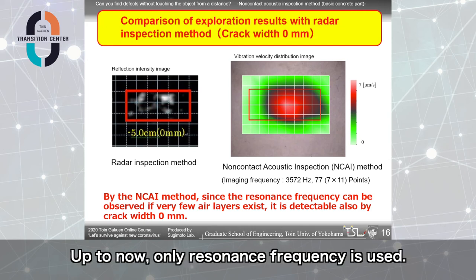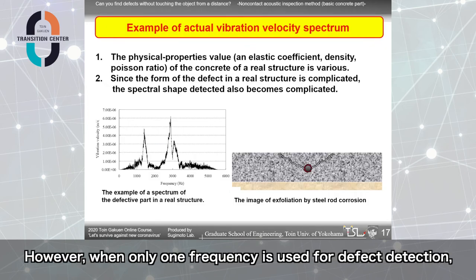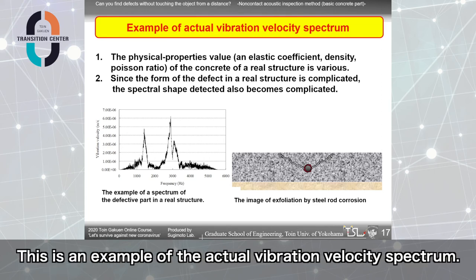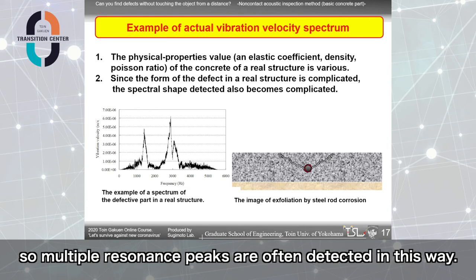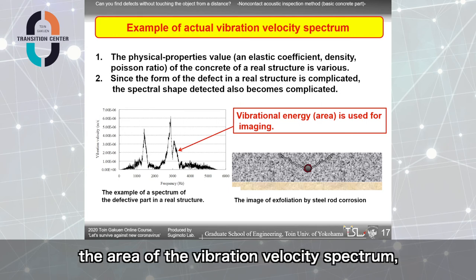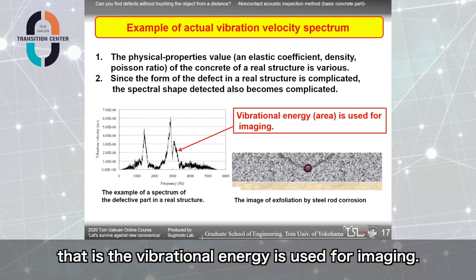Up to now, only resonance frequency is used. However, when only one frequency is used for defect detection, the defect size may be mistaken. This is an example of the actual vibration velocity spectrum. Defect shapes in real structures are complex, so multiple resonance peaks are often detected in this way. So, to confirm the size and shape of the defect, the area of the vibration velocity spectrum, that is the vibration energy, is used for imaging.